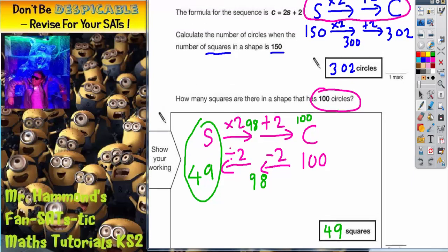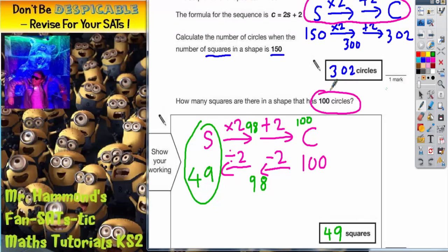So your final answers for the two questions are 302 circles and 49 squares.